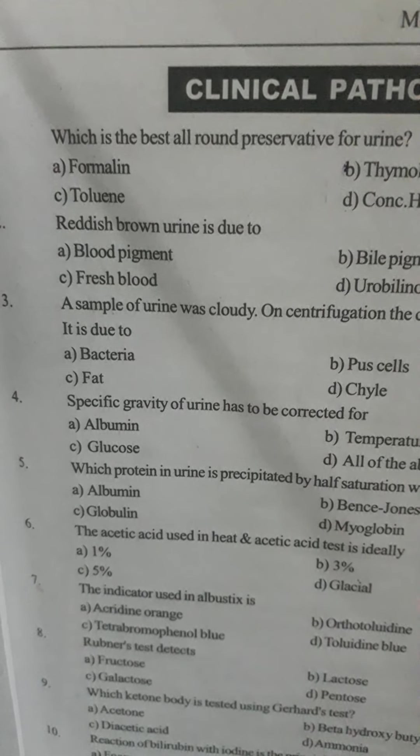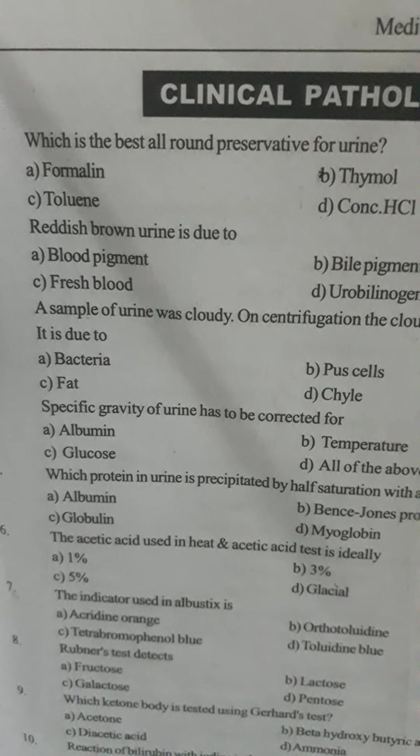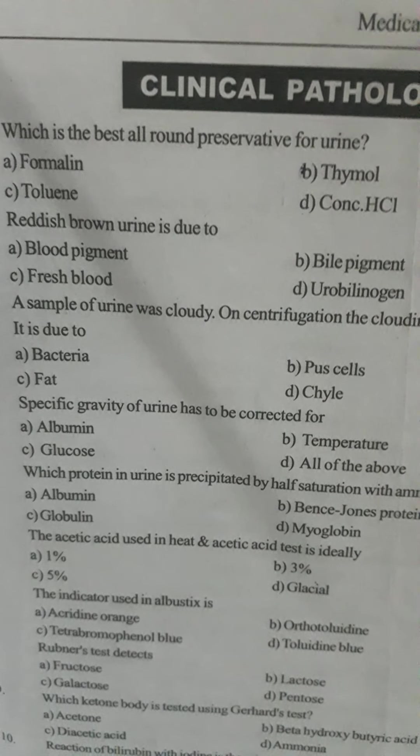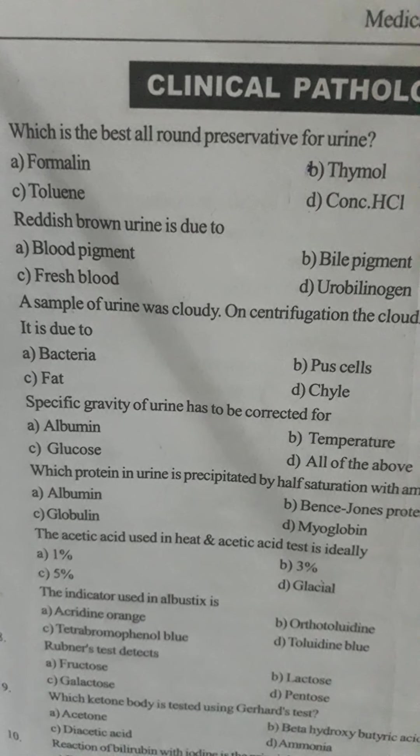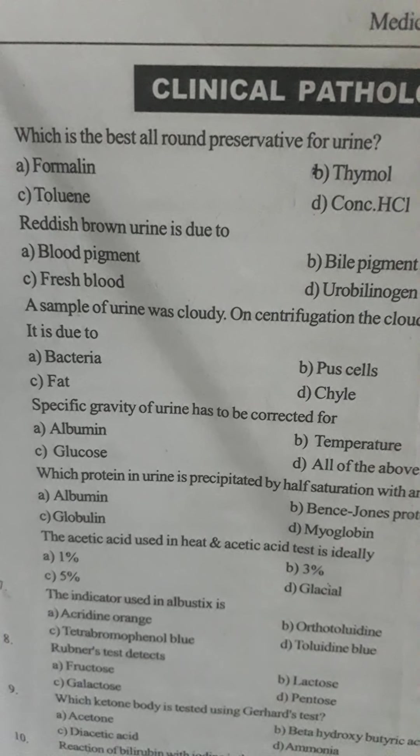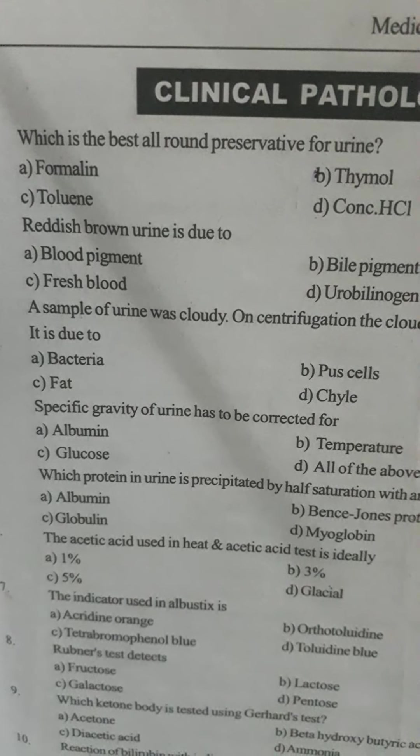Question number six: the acetic acid used in the heat and acetic acid test is ideally — Option A: 1%, Option B: 3%, Option C: 5%, Option D: glacial. The correct answer is Option B, 3%.